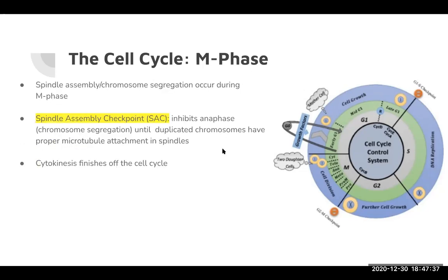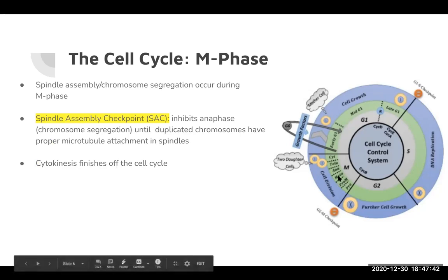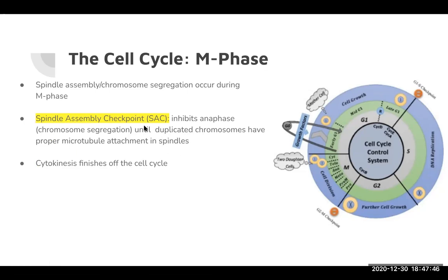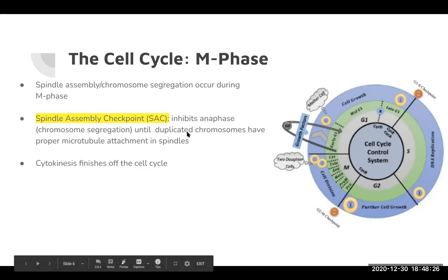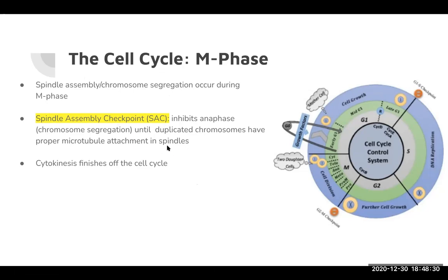M phase actually has a bunch of different phases — I'm sure you've heard of them: prophase, metaphase, telophase, all that. This is where your spindle assembly — the microtubule network we talked about last week — starts assembling. During M phase, chromosomes begin to segregate because they're being pulled apart into two different daughter cells. The microtubule network also maintains the structural integrity of the cell. We also have spindle assembly checkpoints, which we'll talk about in a future review.